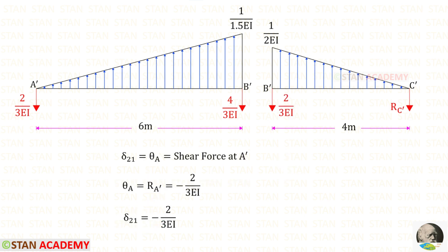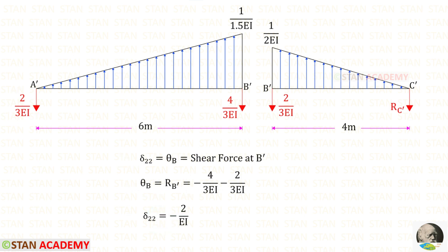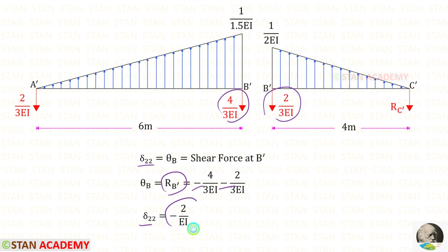Theta 2,1 in the conjugate beam equals RA dash, which is 2 upon 3EI. Since it acts downwards, it is negative. Theta 2,2 equals RB dash; we add RB1 dash and RB2 dash. Since both act downwards, both are negative, giving us theta 2,2.